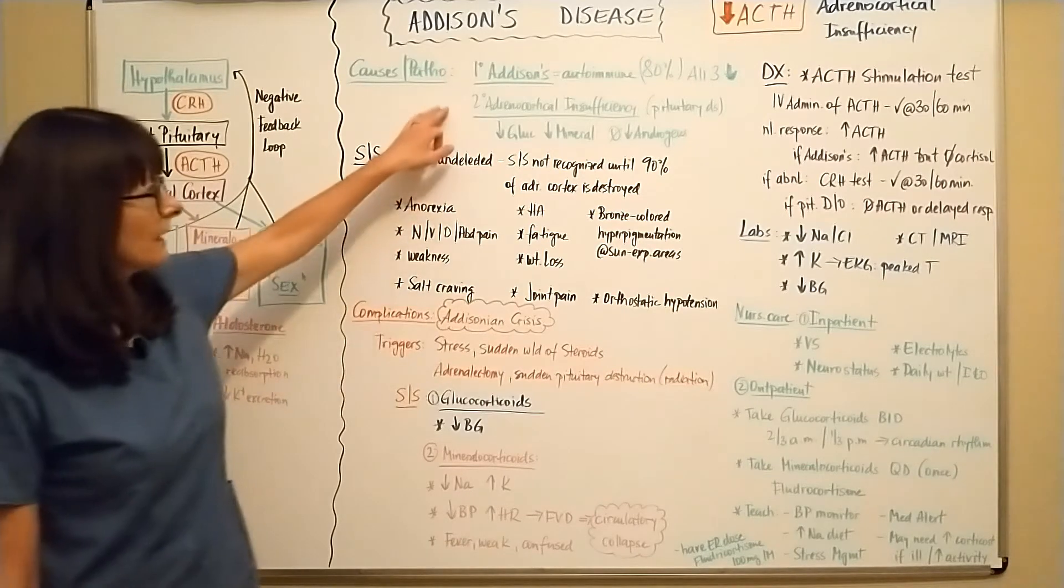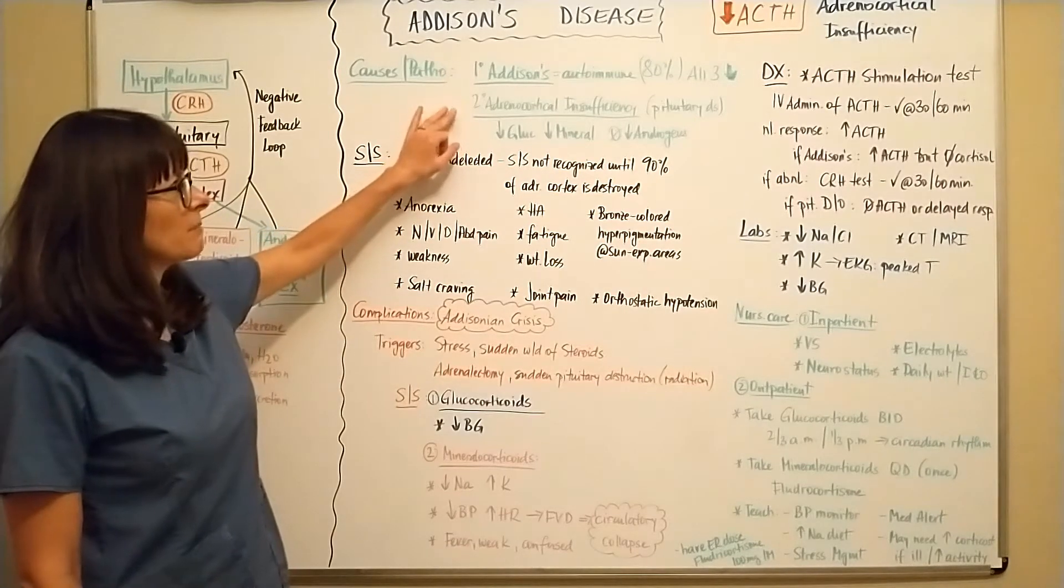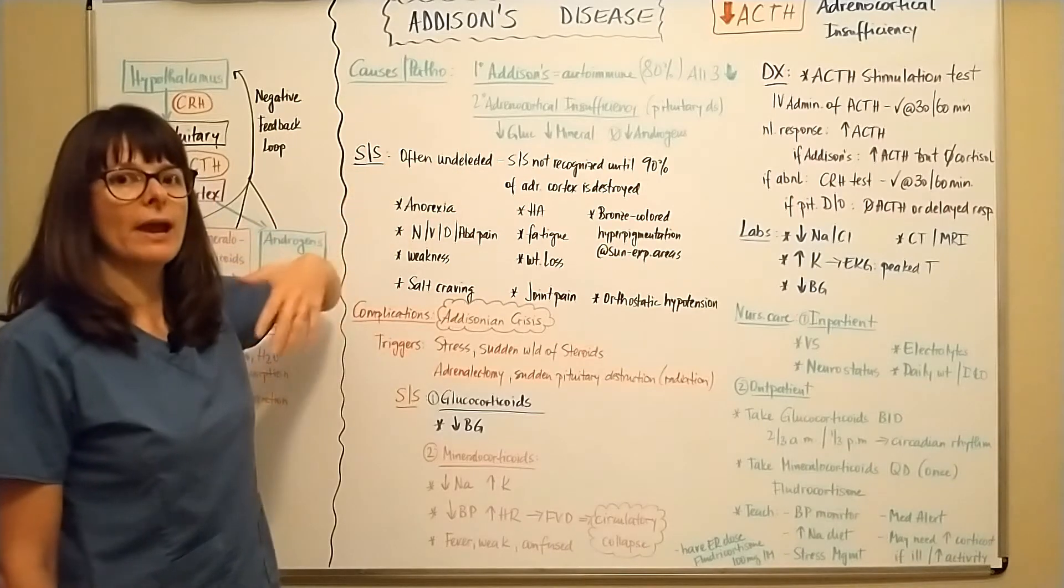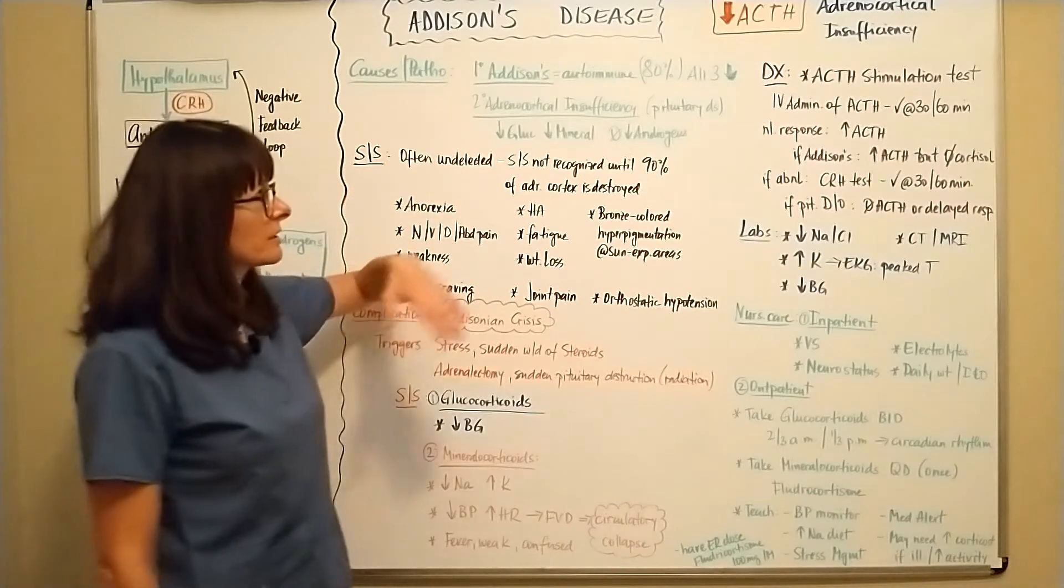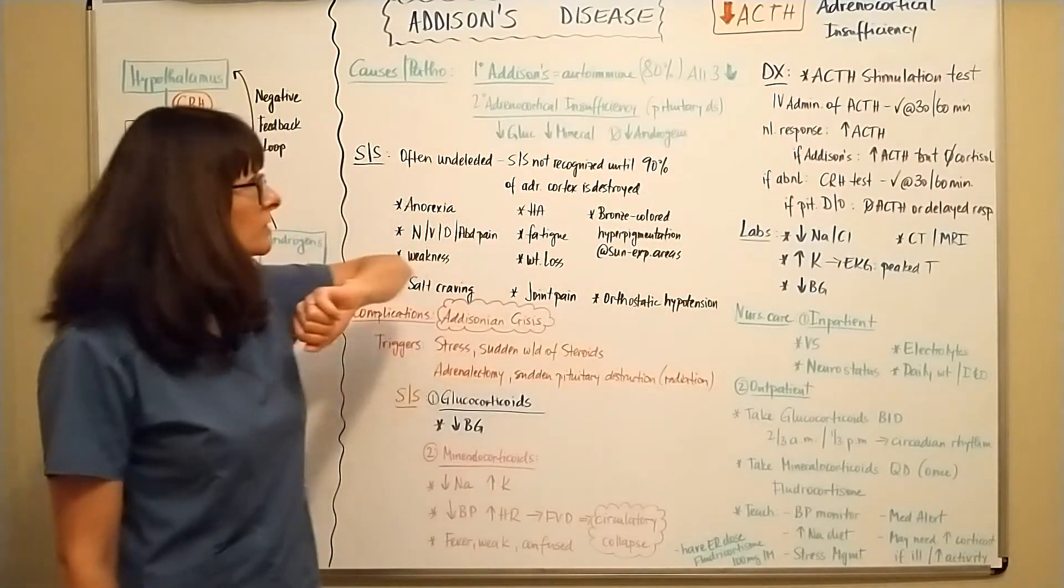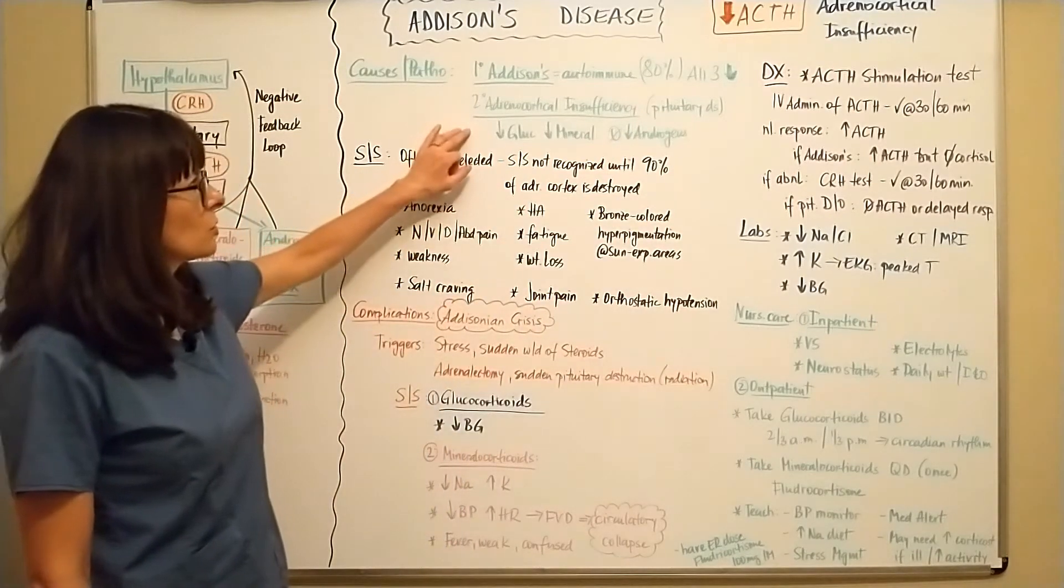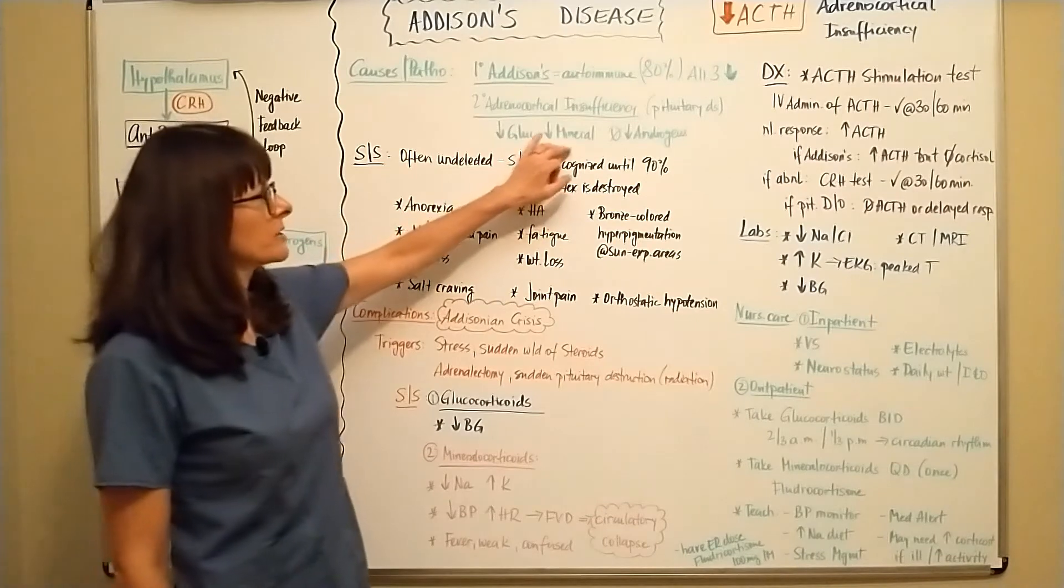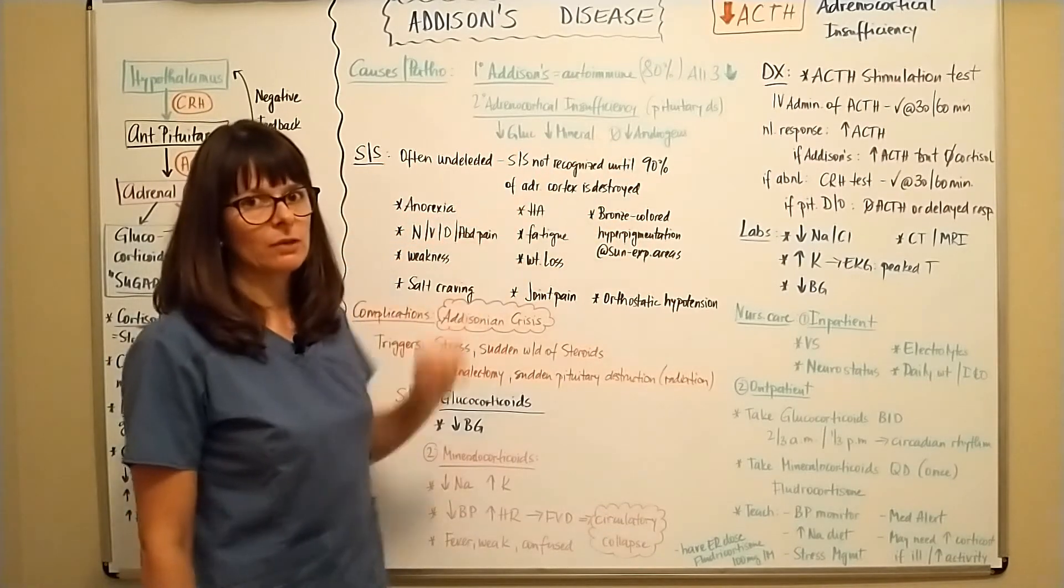If it's secondary adrenocortical insufficiency, that basically means it comes from somewhere else besides the adrenal cortex, and it's usually related to pituitary disorders. And what we'll see there is decreased glucocorticoids, mineralocorticoids, but no decrease in androgens.